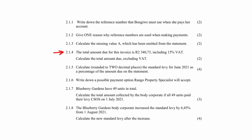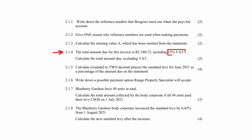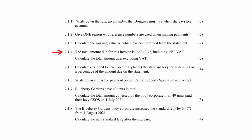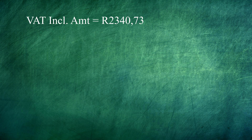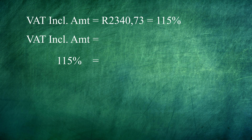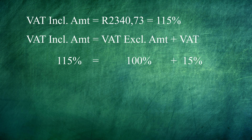In Question 2.1.4, you are told that the total amount due on this invoice is VAT inclusive and the VAT percentage is 15%. You have to calculate the VAT exclusive amount — this is the amount before VAT is added. The VAT inclusive amount is R2340.73, which as a percentage equals 115%. This is because the VAT inclusive amount equals the VAT exclusive amount of 100% plus 15% VAT.